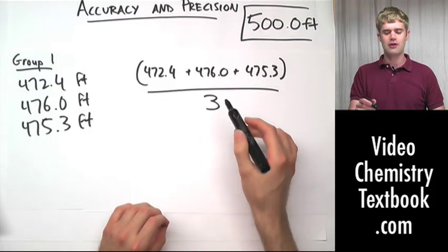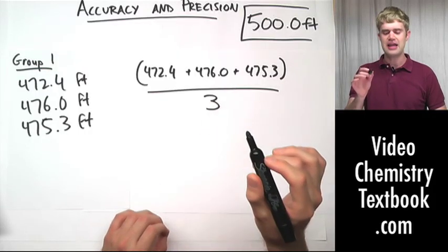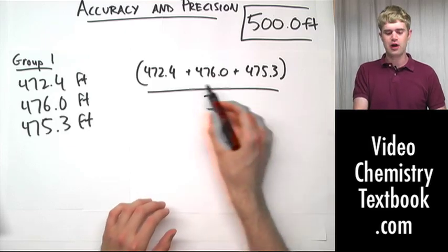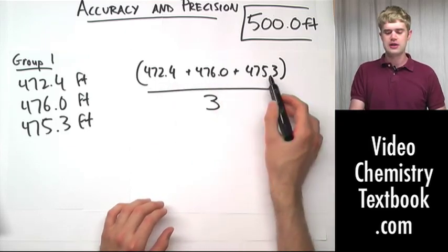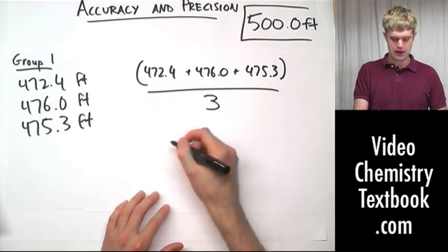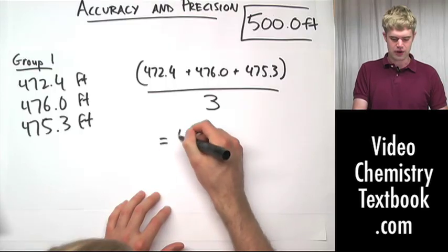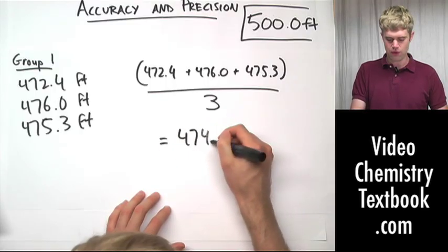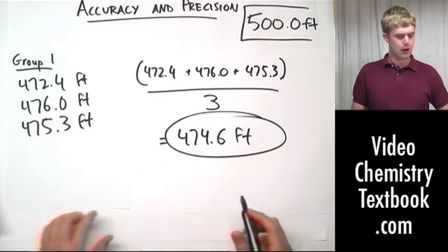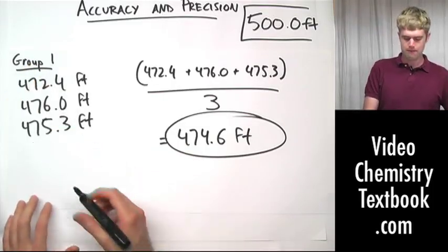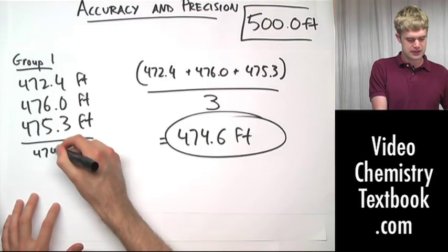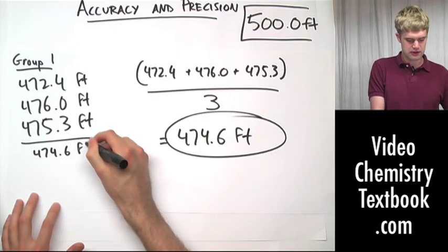Since this is a number we got from counting, it has an infinite number of significant figures, which means we're going to be rounding our final answer to the four significant figures that are in our starting numbers. Add these up, divide by three, and our answer, the average, is going to be 474.6 feet. So group number one's average is 474.6 feet.